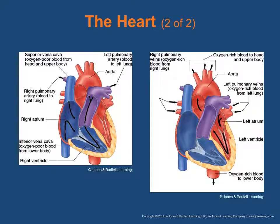Blood comes in from the superior vena cava and the inferior vena cava as unoxygenated blood going to the right atrium, then into the right ventricle and to the pulmonary arteries. The pulmonary artery is the only artery within the body that carries unoxygenated blood to the pulmonary vasculature. Once that happens, it is oxygenated at the cellular level with the alveoli, then returned to the heart from the pulmonary veins — the only veins that carry oxygenated blood back to the heart.